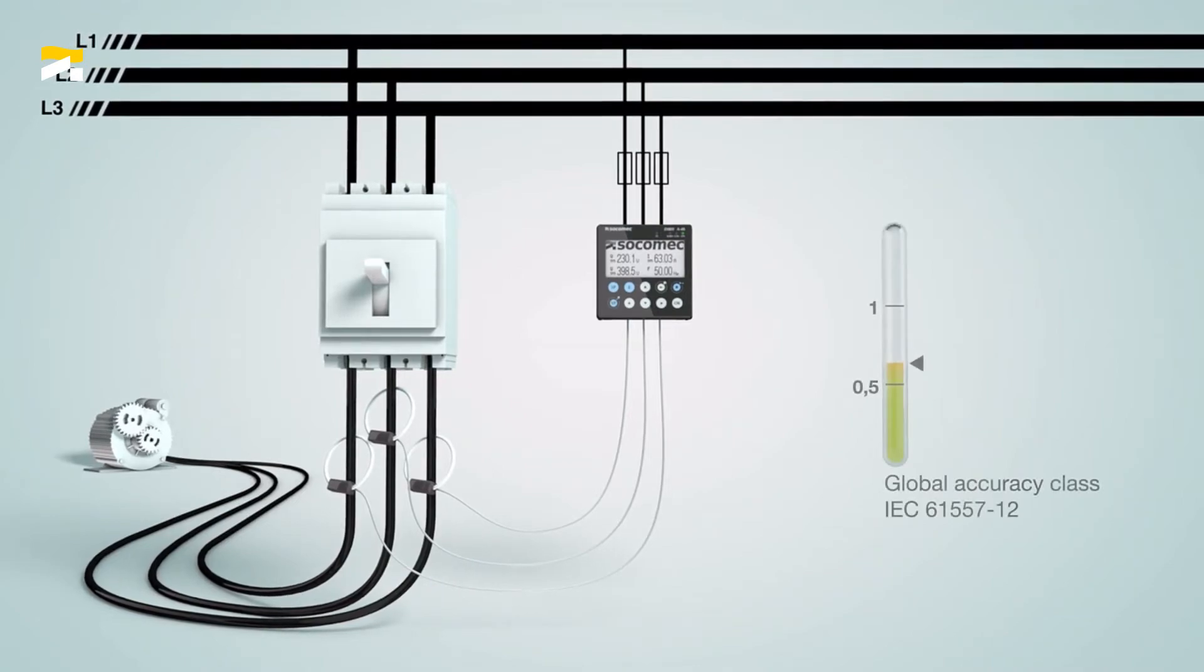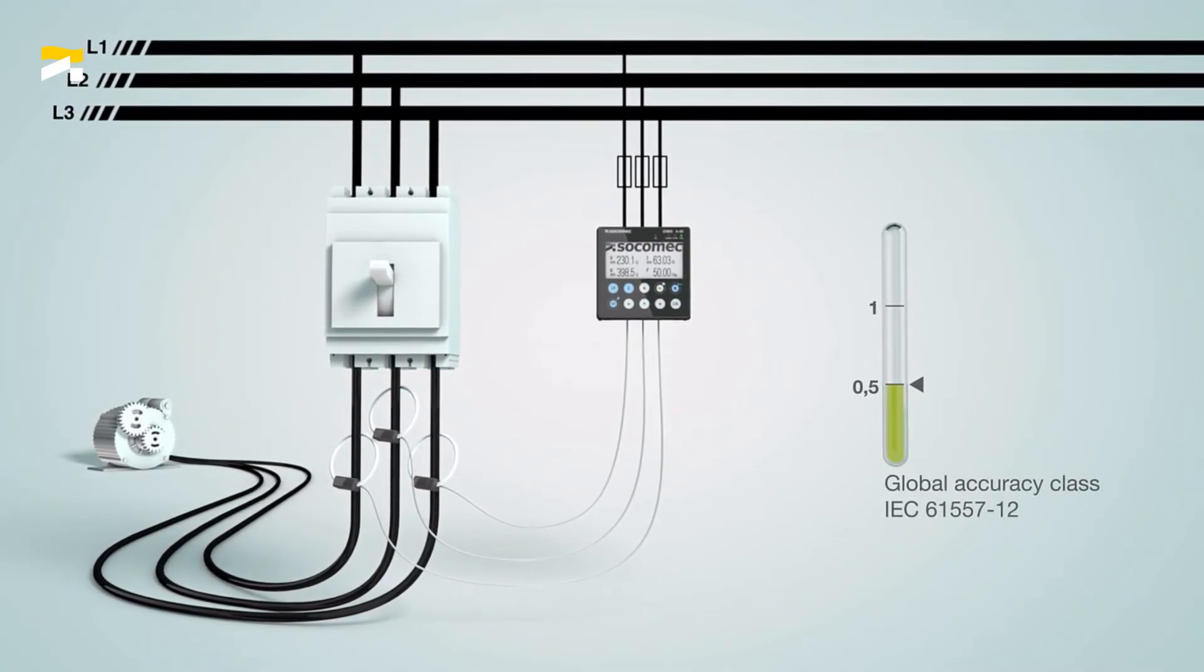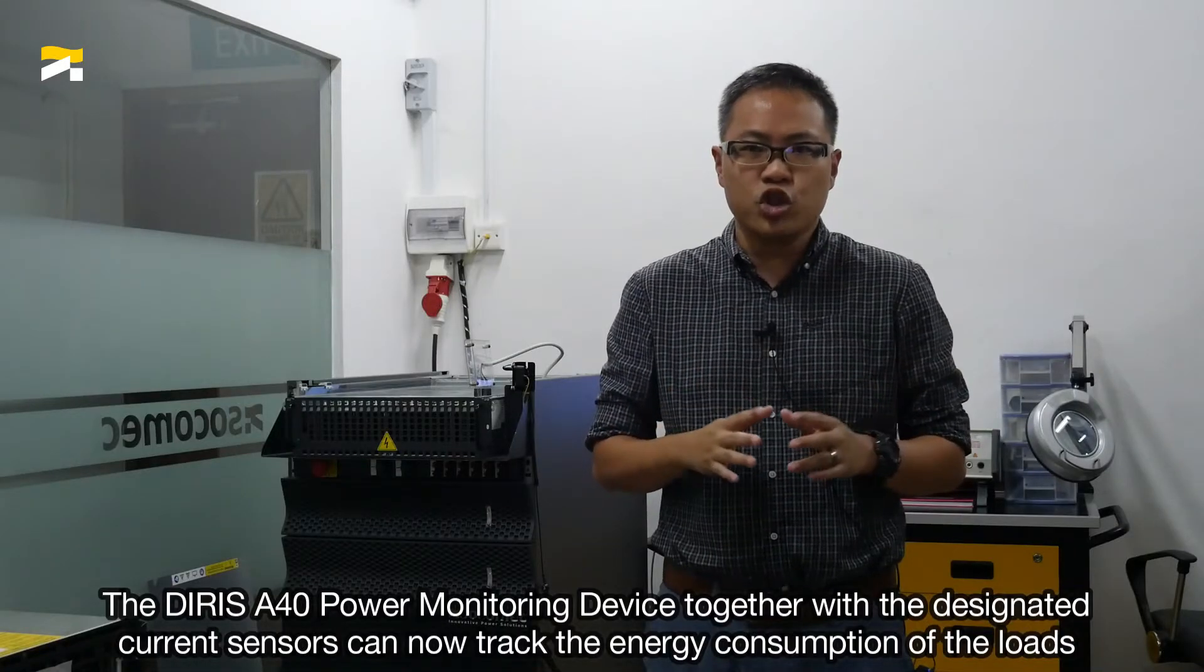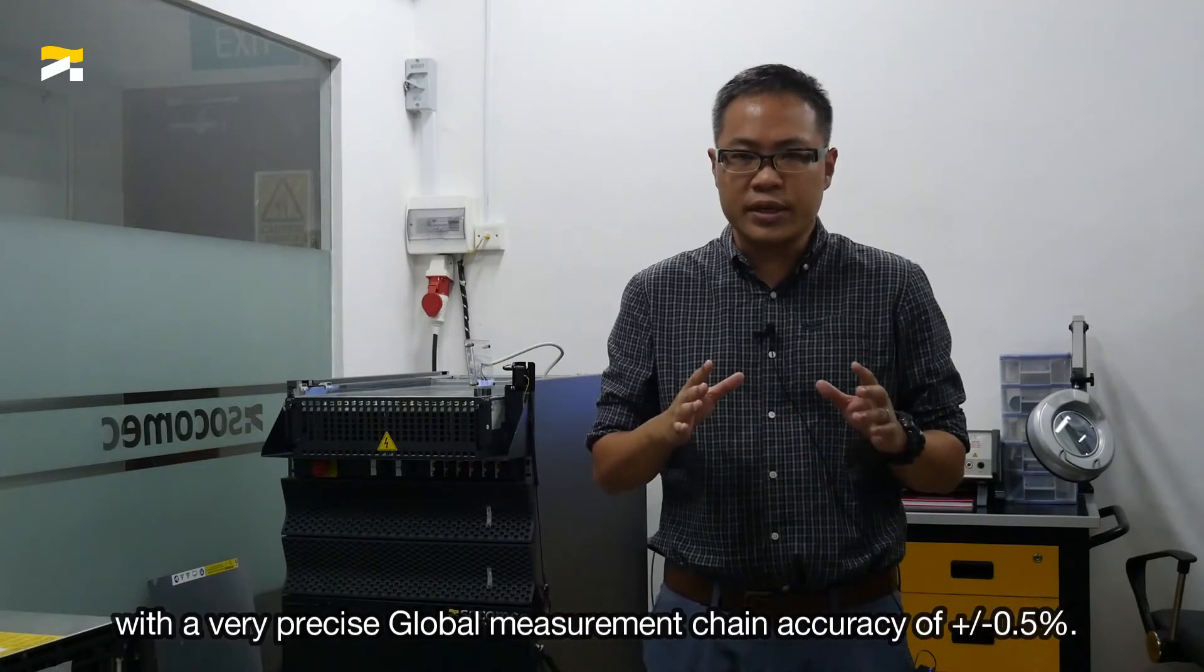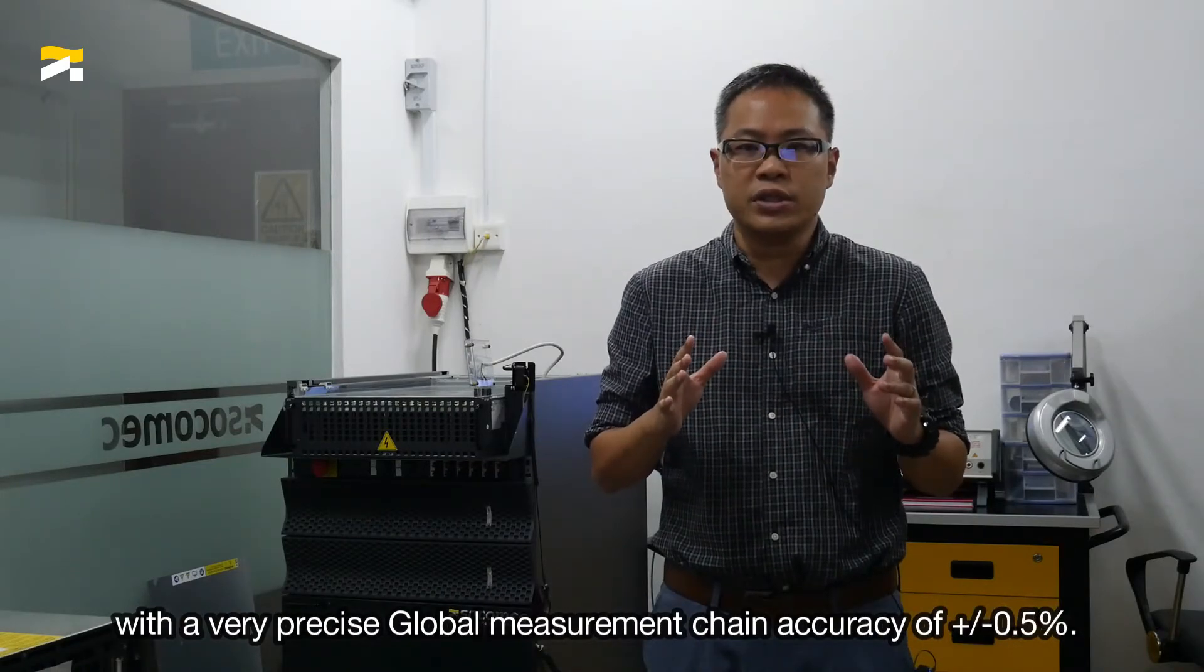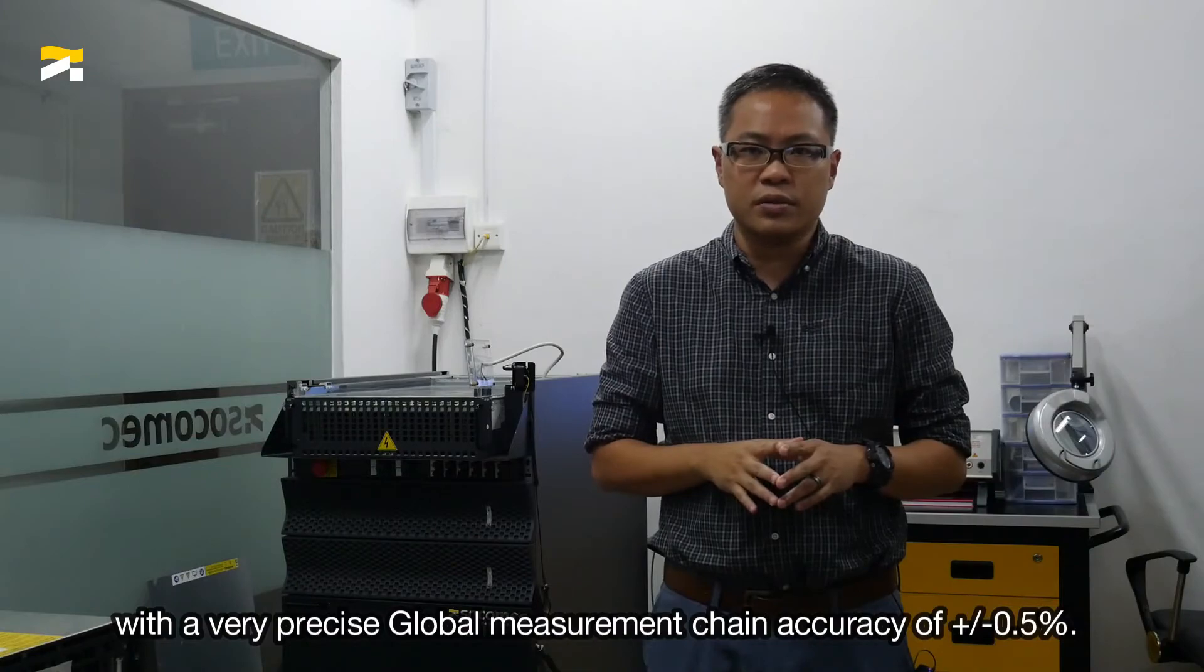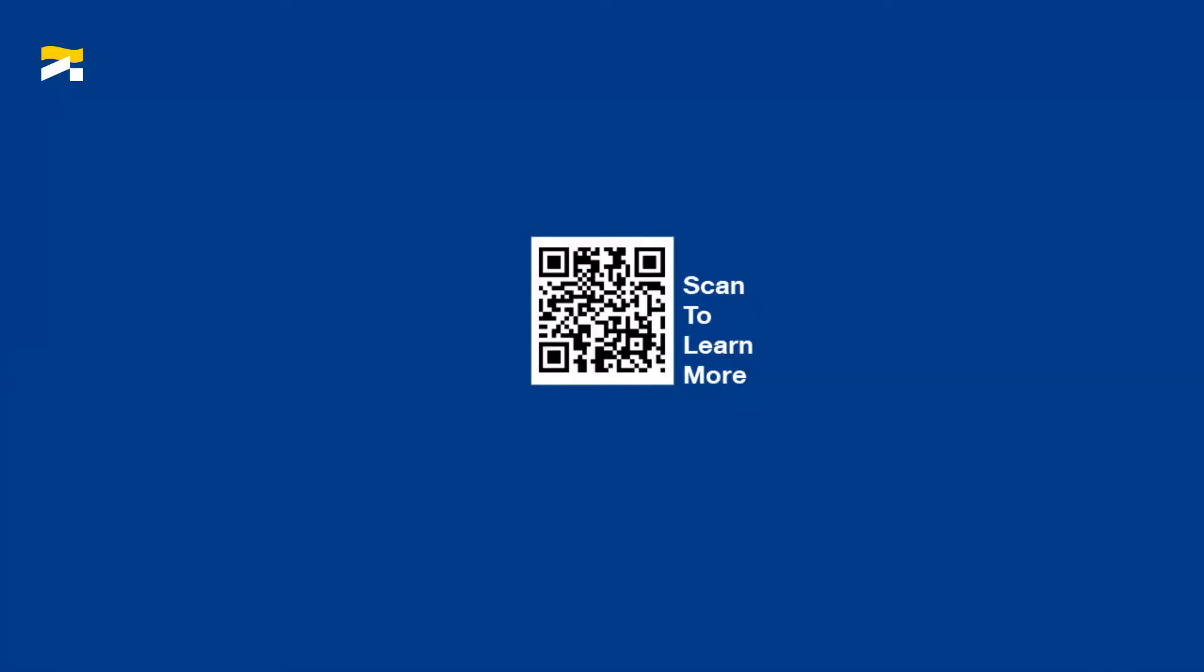The Diris A40 power monitoring device together with the designated current sensors can now track the energy consumption of the loads with a very precise global measurement chain accuracy of ±0.5%. Scan the QR code to learn more.